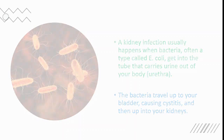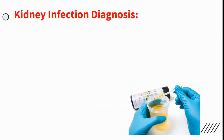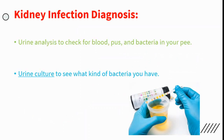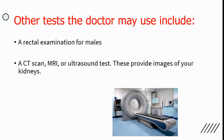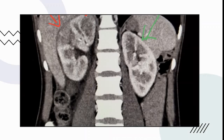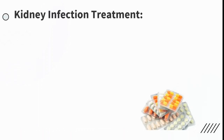For diagnosis, doctors generally use urine analysis and urine culture. Doctors may also use a rectal examination for males, as well as CT scan, MRI, and ultrasound, which provide images of your kidneys.